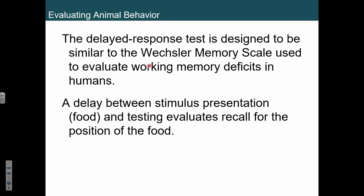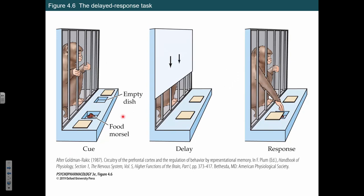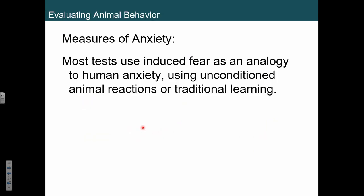The delayed response test is very similar to some of the working memory tests you might give to people. The basic idea: you show the monkey — or animal — here's some food in this dish, and an empty dish. You put a lid on it, close it so the animal can't see it for a while, delay for whatever time frame you want, then raise that up and the animal should remember which dish has the food.